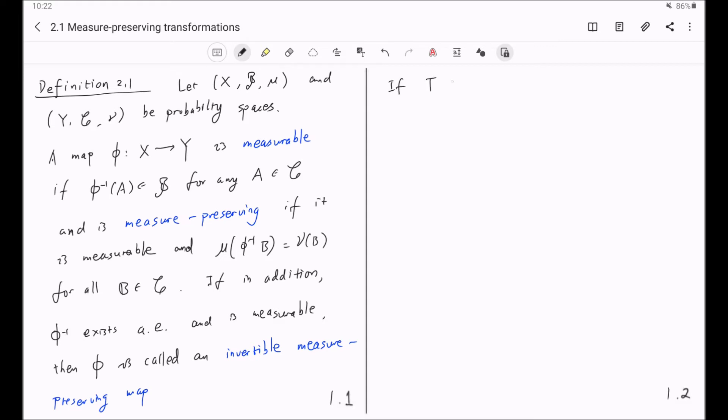And now finally, if T from this probability space to itself is measure preserving, then the measure μ is said to be T-invariant. And in this case, this collection of four things (X, B, μ, T) is called a measure preserving transformation. And that completes this definition 2.1.